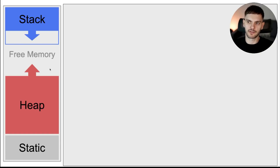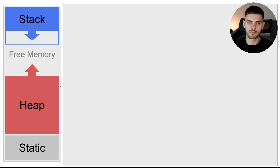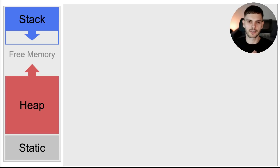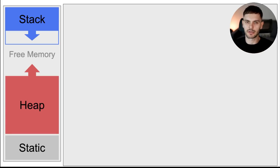Looking at the diagram, the gray box represents our volatile memory — labeled here as free memory, or the memory available to us. Within that, we have three distinct memory regions with their own unique characteristics: static memory, the heap, and the stack. We'll examine each region by looking at its contents, its size, the lifetime of the values inside, and how those values are cleaned up.